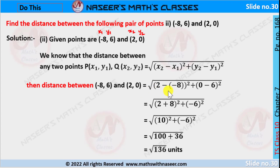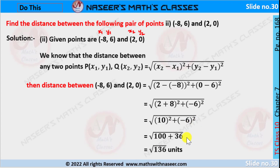We can write it as the square root of (2 minus of minus 8) all squared plus (0 minus 6) all squared. Here, minus into minus gives plus, so it becomes 2 plus 8, and 0 minus 6 is minus 6. Then 2 plus 8 is 10 and minus 6 all squared is 36. 10 squared is 100, plus 36 gives square root of 136. So the distance between minus 8 comma 6 and 2 comma 0 is equal to square root of 136 units.